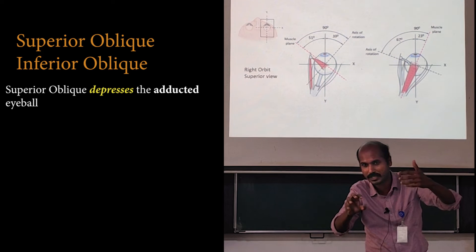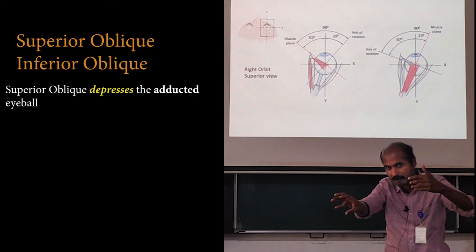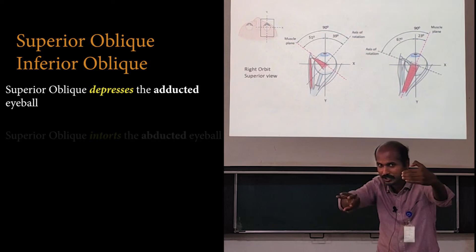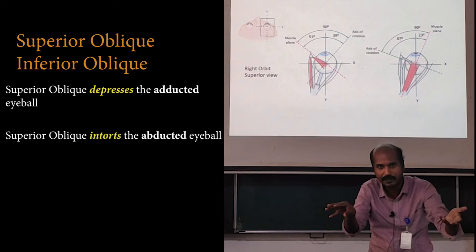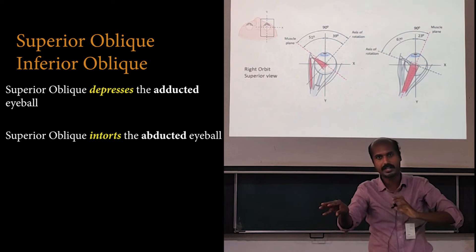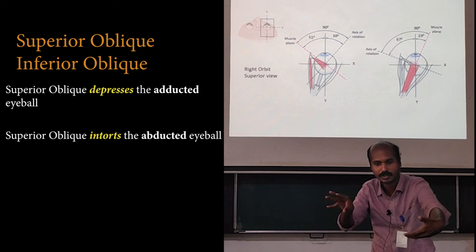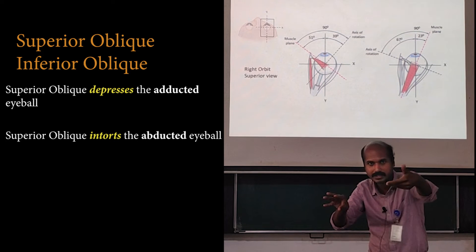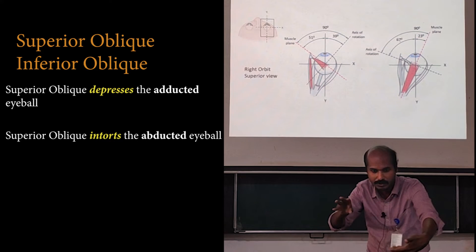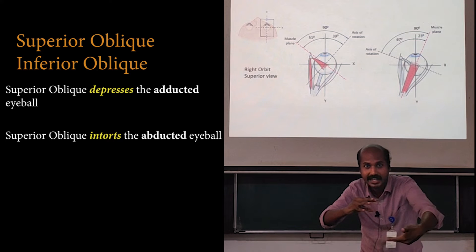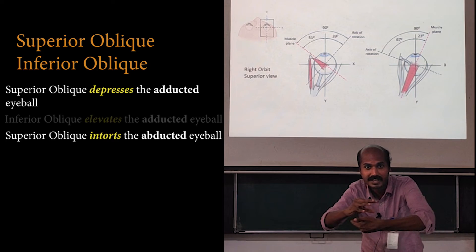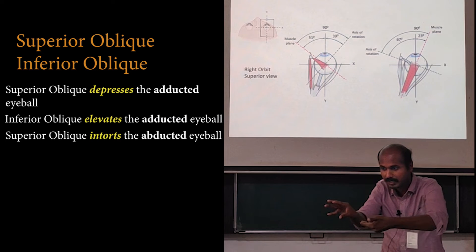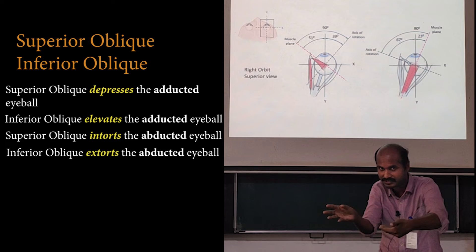When the eyeball is abducted, the superior oblique will cause intorsion. Now considering the inferior oblique — the only difference is that the inferior oblique takes origin from the floor of the orbit, not the apex. But the line of pull is similar, parallel to the superior oblique, just below the eyeball. When the eyeball is adducted, the inferior oblique will cause elevation. When the eyeball is abducted, inferior oblique contraction will cause extorsion.